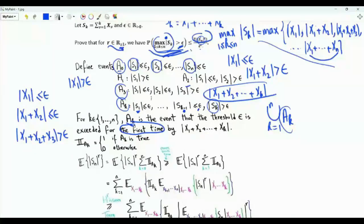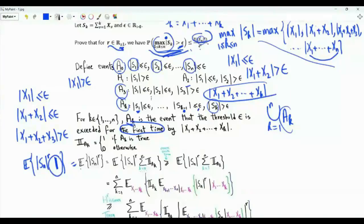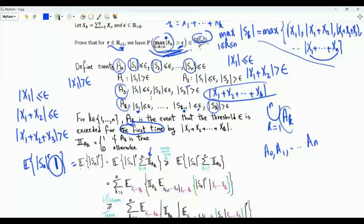Let's define indicator A_k to be 1 if A_k is true and 0 otherwise. We start with the expectation in the numerator of the upper bound: E[|S_n|^r]. We write 1 as the sum from k=0 to n of indicator A_k, since in the set of events A_0, A_1, ..., A_n exactly one event is true and the rest are false. The sum of indicators equals exactly one. The sum of non-negative terms is lower bounded by the sum without the k=0 term.